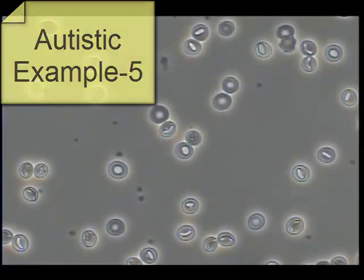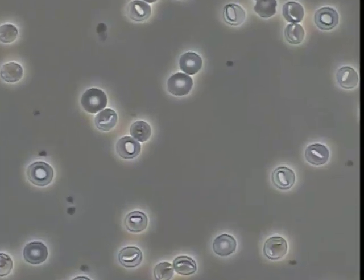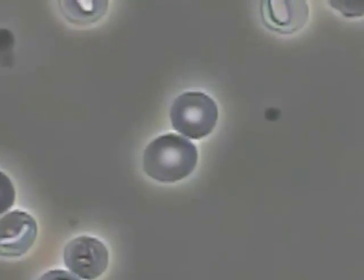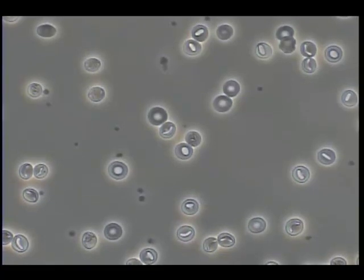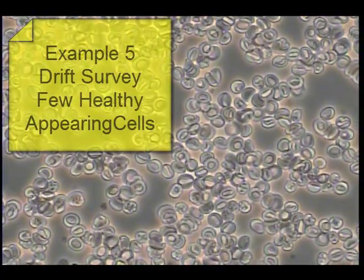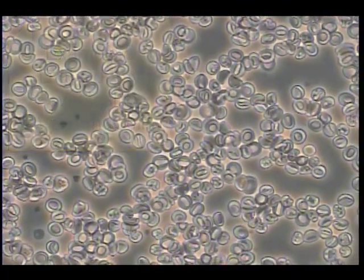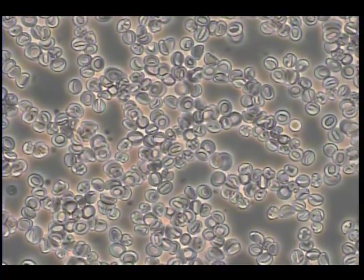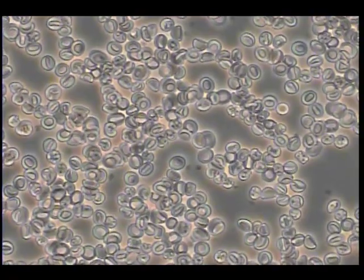Sample 5 shows a different category of dysfunction. The majority of cells on this view present surface anomalies suggesting either collapsed cell membrane or parasitic inhabitation. Note the small percentage of erythrocytes which appear healthy. The drift survey view shows a very high percentage of damaged red blood cells and a very low percentage of healthy erythrocytes. The probability that this blood can deliver adequate oxygen to brain cells and body cells is very low.